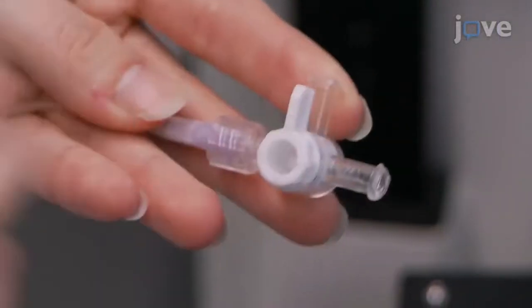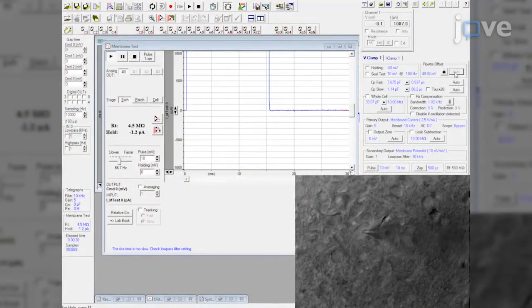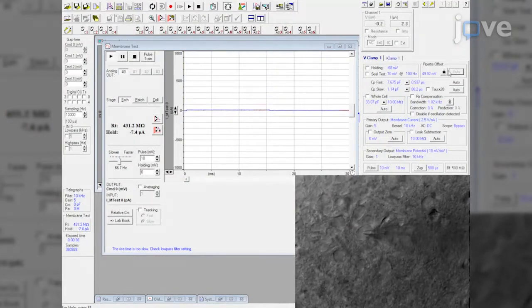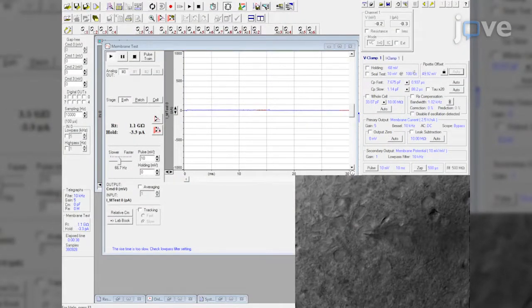Then release the positive pressure lock. The cell will begin to form a seal and the resistance will increase above 1 giga-ohm. In voltage clamp, hold the cell at minus 68 millivolts.